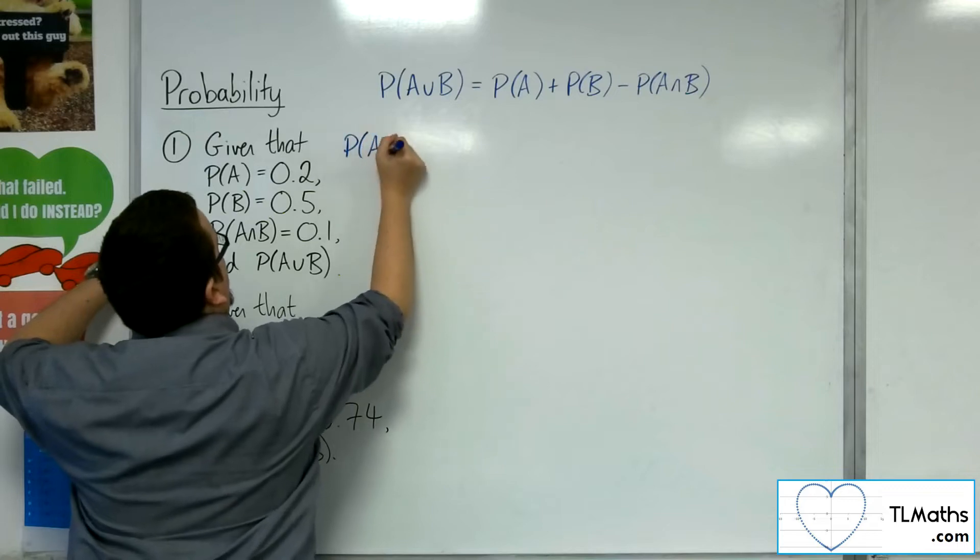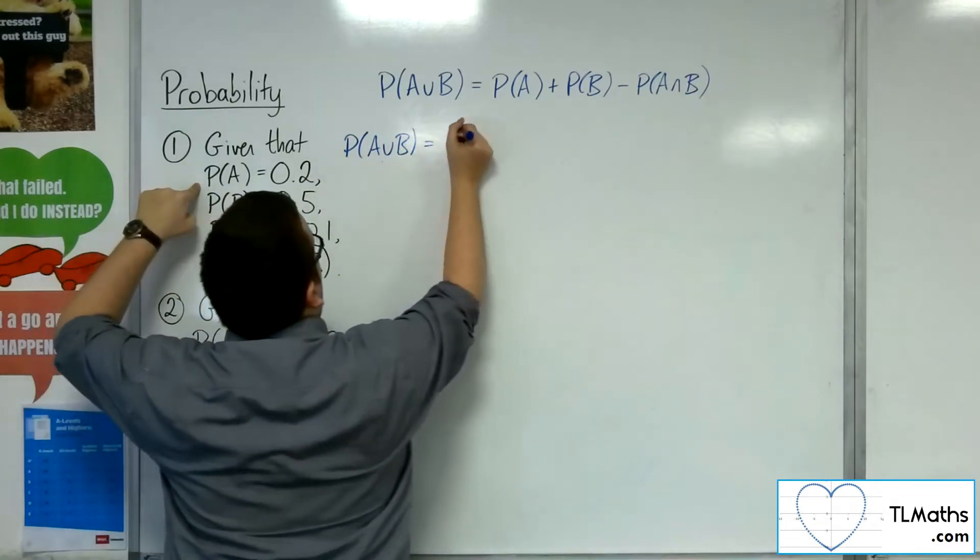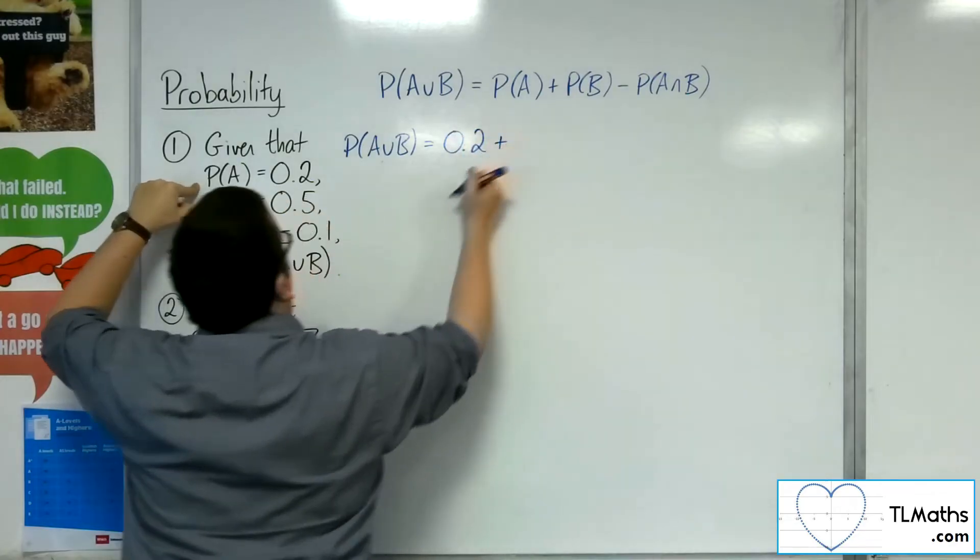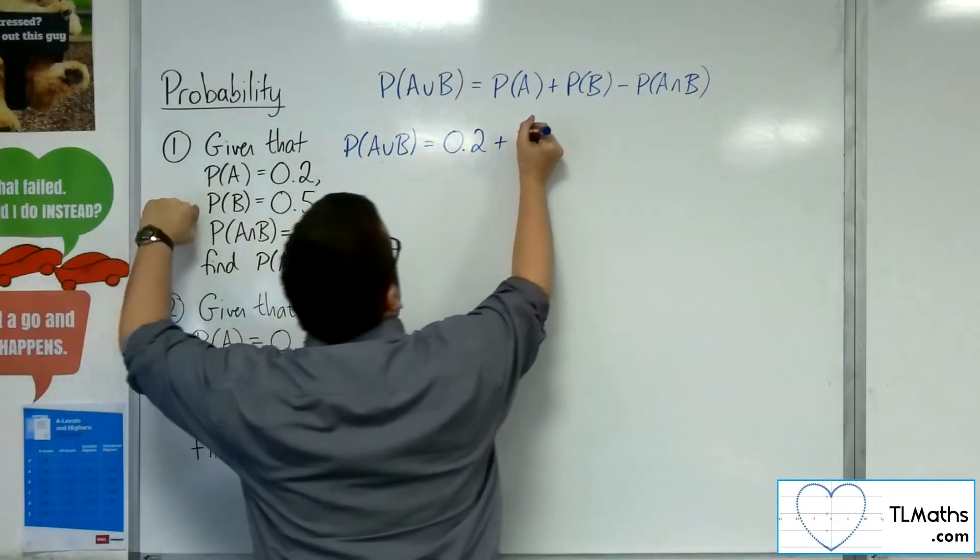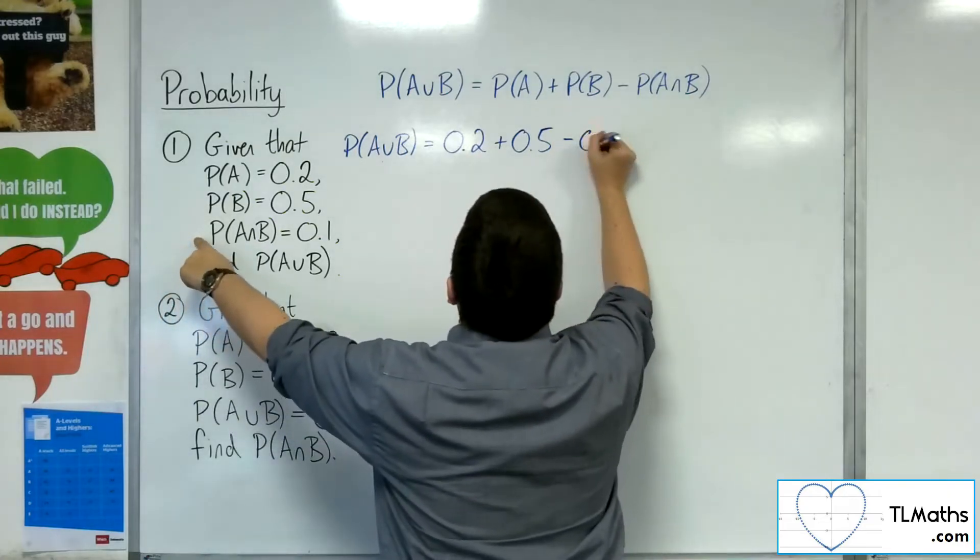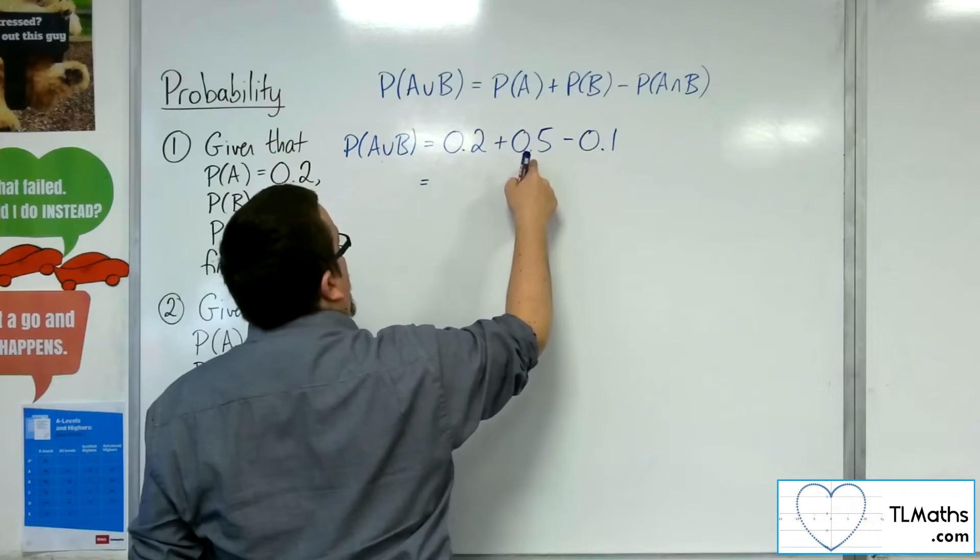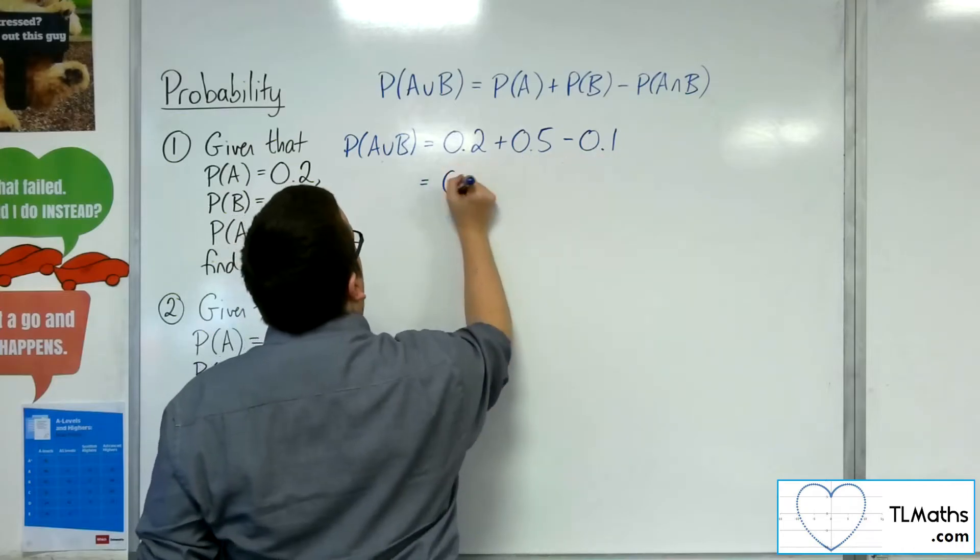Because the union will be the probability of A, 0.2, plus the probability of B, 0.5, take away the probability of the intersection. So that's 0.2 plus 0.5 is 0.7, take away 0.1 is 0.6.